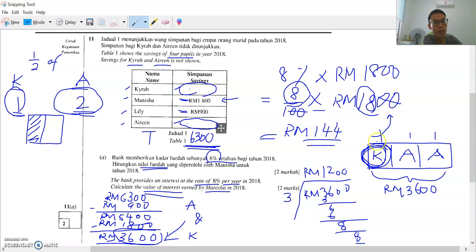So satu bahagian ialah RM1200. Kaira's saving is RM1200. How much is Irene's saving? Irene ada dua bahagian, satu bahagian, dua bahagian. So if satu bahagian ialah seribu dua ratus, dua bahagian ialah dua ribu empat ratus. Irene's saving is RM2400.